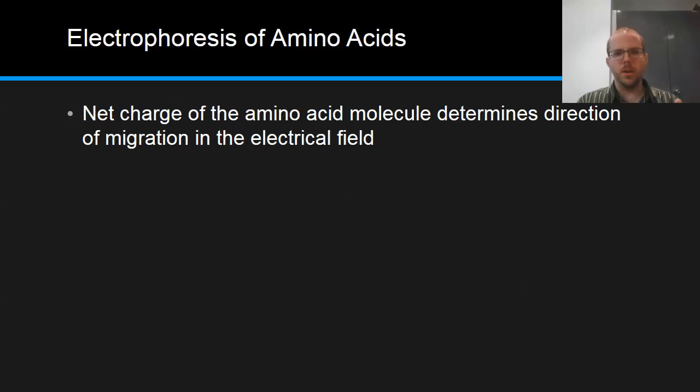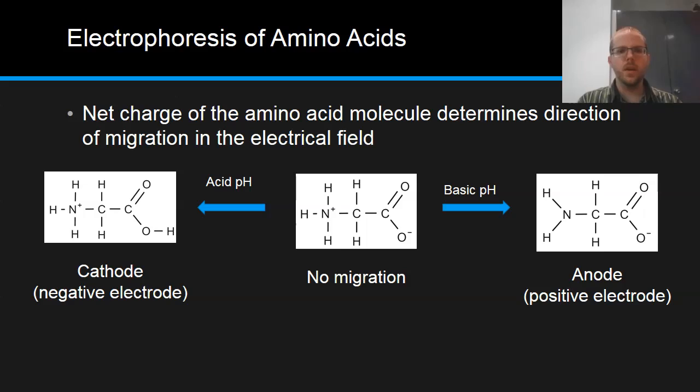The net charge of the amino acid molecule determines the direction that it migrates in the electric field. Which way does it move? Does it move towards the positive electrode, the negative electrode, or does it stay put? We see that the cationic form migrates towards the cathode. Cathode and cation—that's where the origin of the name comes from. The positively charged ion will be attracted to the negatively charged electrode. Likewise, we can see the anode, which is positively charged. Anions are attracted to the anode. The anionic form, which is negatively charged, will be attracted to the positively charged electrode. And then when we have the zwitterion in the middle, which has a net charge of zero, it's not attracted to either electrode and stays put.